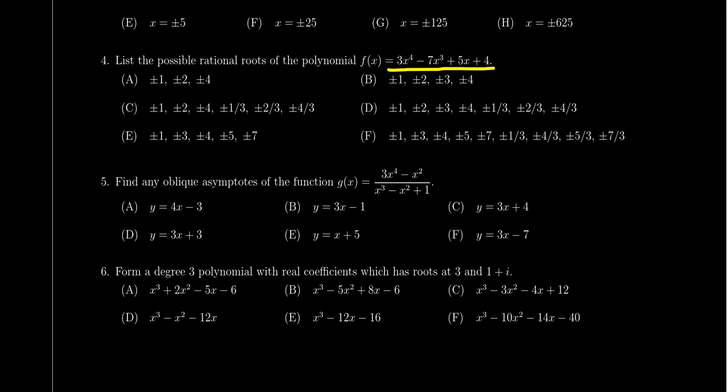We're supposed to list all of the possible rational roots of this polynomial. That is to say, we're supposed to invoke the rational roots theorem to determine what these possible rational roots are. To do this, we take the constant term of the polynomial, which is positive four, and the leading coefficient, which is positive three. We look at all possible divisors of four divided by three.